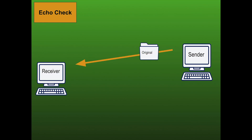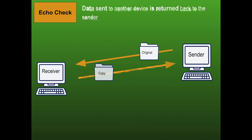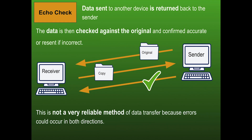Next is an echo check. Just think of what an echo means — if you say something and hear it echoed back, it's coming back again. The sender sends the file and then the receiver sends back a copy. The sender can double check that the copy is correct and send an acknowledgement. This is not a very reliable method because an error could occur at any time — the copy sent back could be corrupted, and it doesn't identify where the flaw happened.